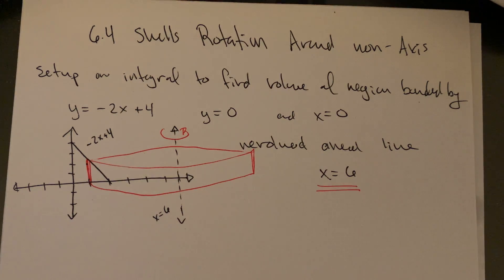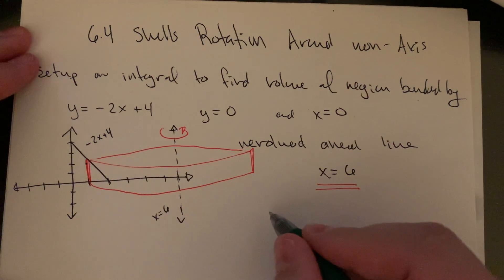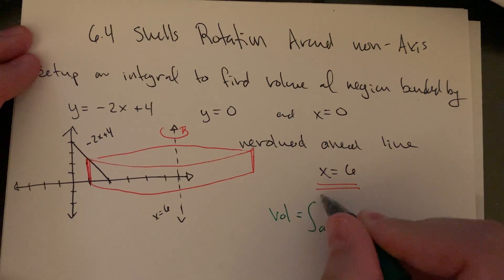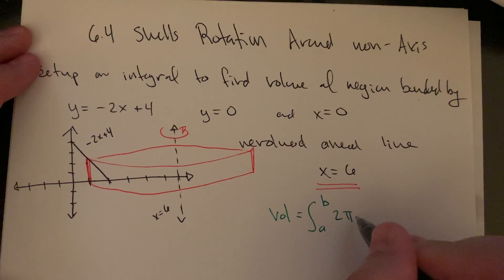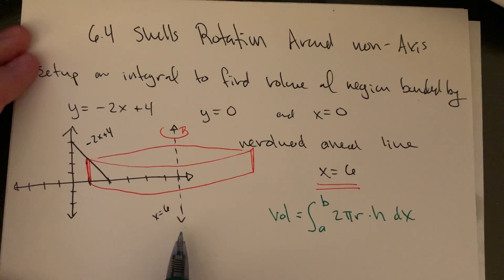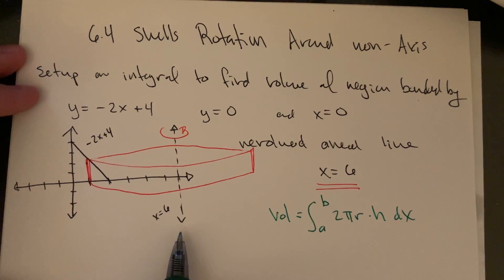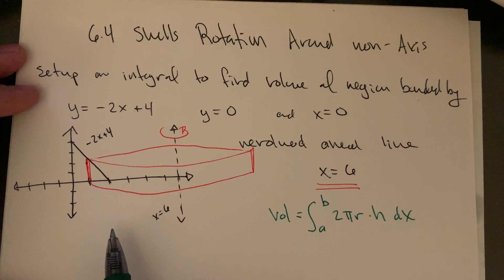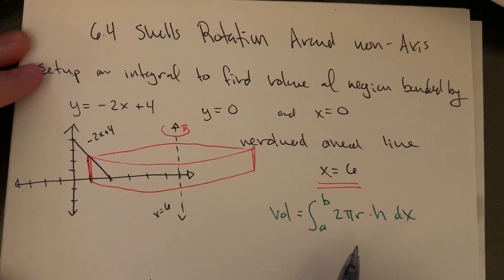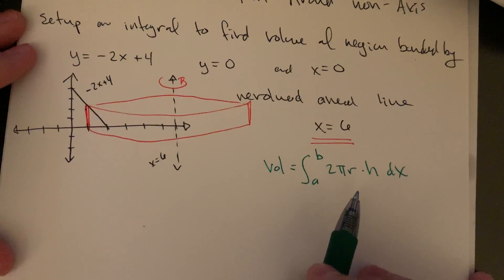The same basic setup applies: volume equals the integral from a to b of 2 pi times the radius times the height dx. This is a vertical line we're rotating around, so it should mimic the setup of rotating around the y-axis. We'll expect this to be a dx integral.